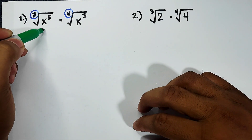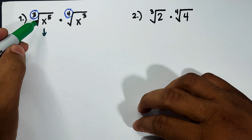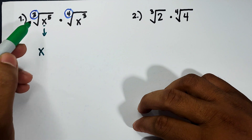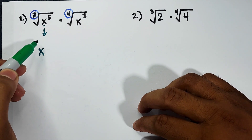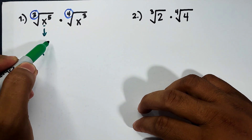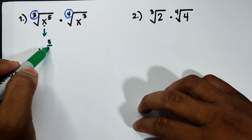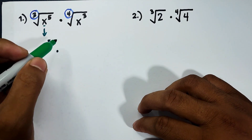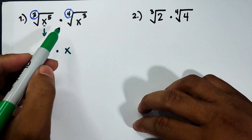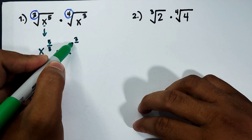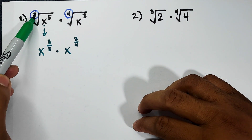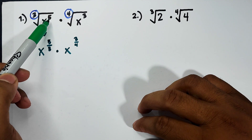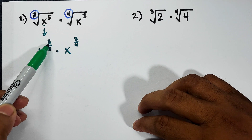Let's convert first. Here, if we're going to convert this, copy x, and then the rational exponent or fractional exponent becomes 5 over 3. This will become 5 over 3. And then times x raised to — it will become 3 over 4. The index will become the denominator of the exponent, and the exponent of the radicand will become the numerator.